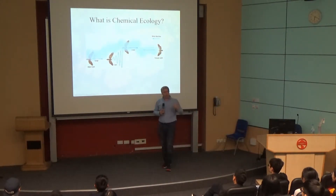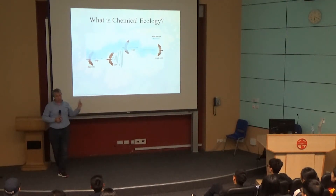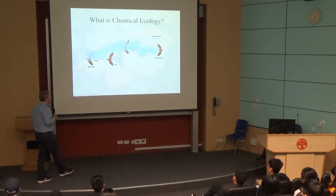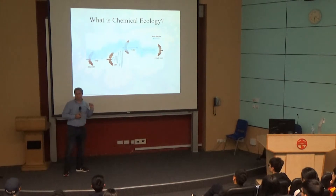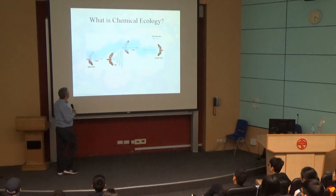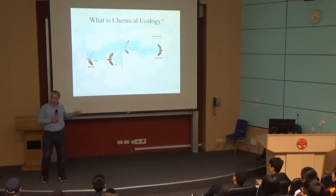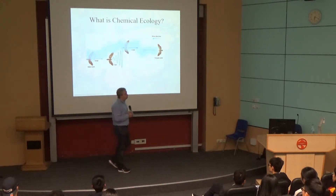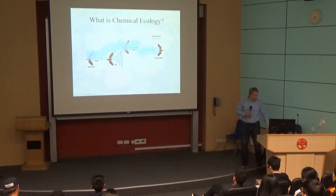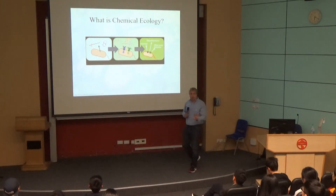Now let's get on to chemical ecology. Chemical ecology is the study of how organisms interact chemically. Organisms can interact chemically with members of their own species—for example, a female moth puts off something called a pheromone that attracts the male moth. Whenever two organisms of the same species are interacting chemically, those chemicals are called pheromones. Things like mosquito traps baited with pheromones. But this is more than just insects—it's pretty much every type of organism that communicates chemically some way or another.